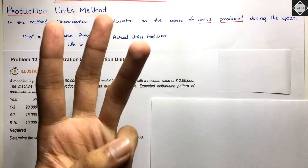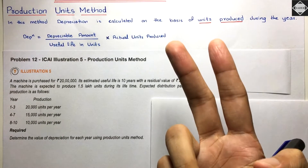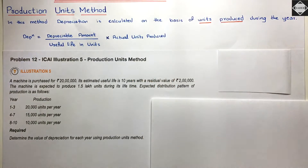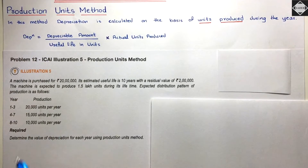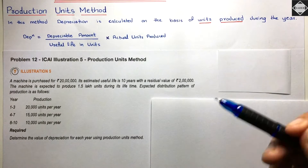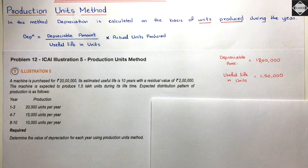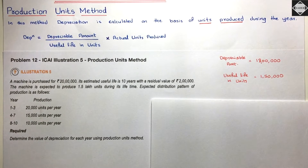In the first three years, the machine produces 20,000 units per year. In years 4 to 7 (the next four years), it produces 15,000 units per year. In years 8, 9, and 10 (the last three years), it produces 10,000 units per year. We are required to calculate the depreciation for each year using the Production Units Method.